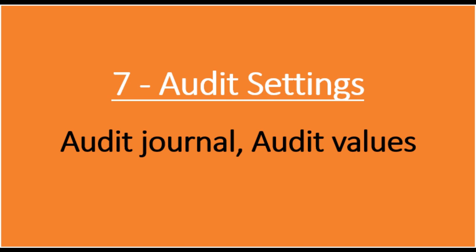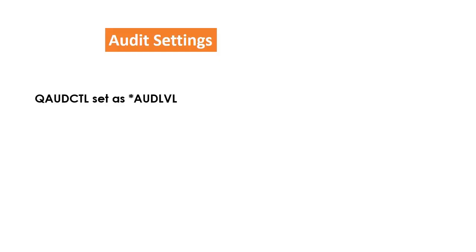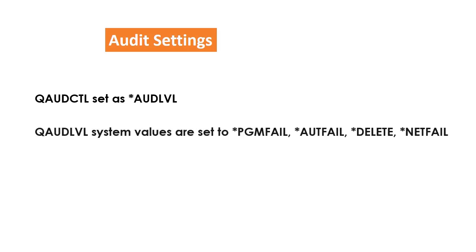Point number 7: Audit Values. On AS/400, security-related events are logged to the security auditing journal called QAUDJRN. When the auditing function is active, ensure that the AS/400 Auditing Facility has been set up for the system value QAUDCTL as *AUDLVL, which means the audit levels. Ensure that QAUDLVL system values are set to *PGMFAIL, *AUTFAIL, *DELETE, *NETFAIL, etc., as per the organization's policy requirements.